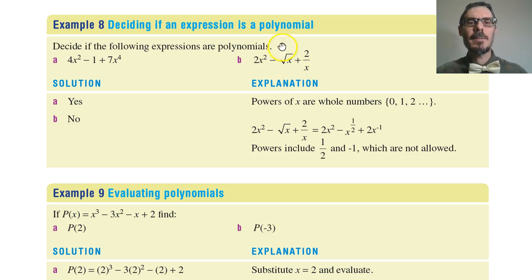What about b? This is a sum of powers of a variable, but this one's power is a half, and this one's power is negative 1. Neither a half nor negative 1 are allowed in a polynomial.